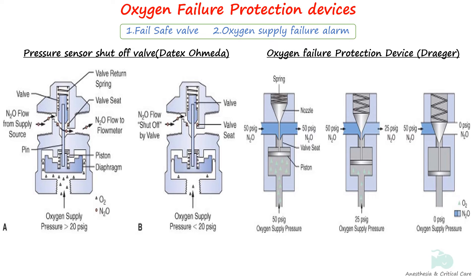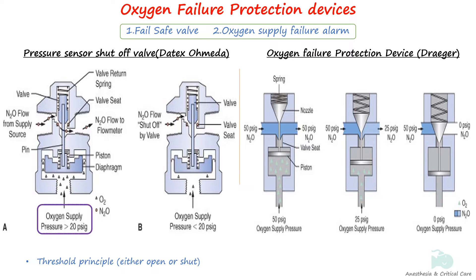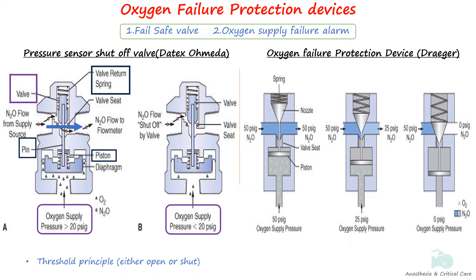The pressure sensor shutoff valve, used in machines like Datex Ohmeda, operates in a threshold manner — the valve is either open or shut to allow the flow of nitrous oxide depending on the oxygen supply pressure. In diagram A, oxygen pressure moves the pin and piston up, opening the valve and allowing nitrous oxide flow. When oxygen pressure falls below the preset level, as shown in diagram B, the force of the valve return spring closes the valve completely.